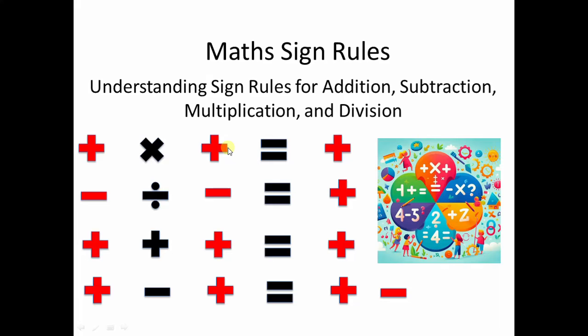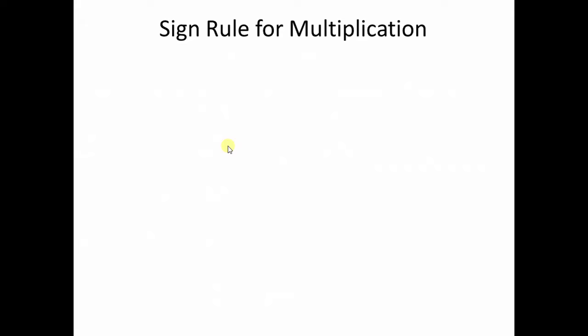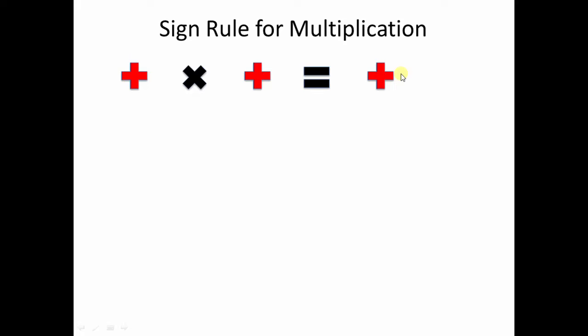So let's move ahead and start learning the rules step by step. The first rule I'm going to teach you is the sign rule for multiplication. There is a reason I am not choosing addition or subtraction prior to multiplication — as we come to the end of the video you're going to learn why. A positive number multiplied by a positive number gives a positive result.